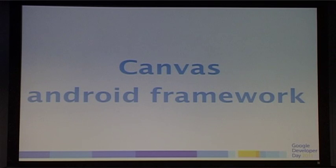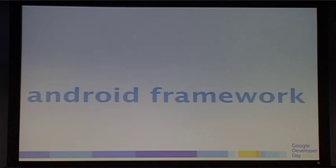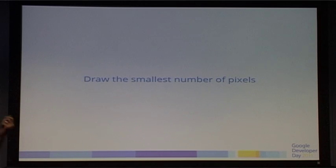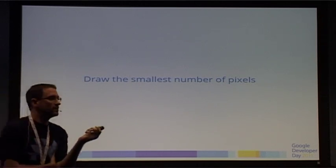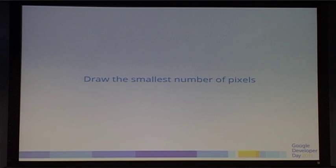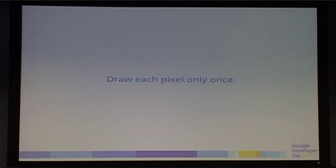A lot of the Android framework in Gingerbread and below is done on the canvas and it's not hardware accelerated. The canvas has all its operations and is one of the most feature-rich ways of pushing graphics to the screen in Android — texture rendering, bitmap drawing, scaling, rotation, skews. But think about how to make that high performance, because it isn't taken care of for you. You've got to think about drawing the smallest number of pixels. Think about your clip rectangles. When you invalidate the screen, don't invalidate the whole thing. Try to draw each pixel only once — don't layer everything on top of each other.